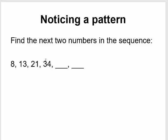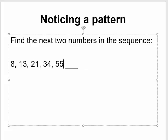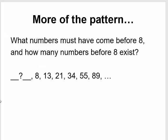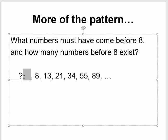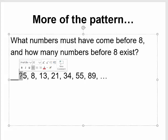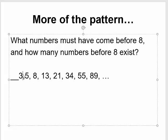Do you notice the pattern? What is 21 plus 34? It ends up getting you 55. What's 55 plus 34? That ends up getting you 89 — those are the two previous numbers. Thinking about this, what numbers must come before 8? To get to 13, you had to add 5 to 8. To get to 8, you had to add 3 to 5. And so on — you can see the pattern.